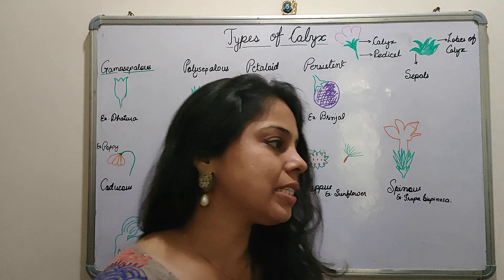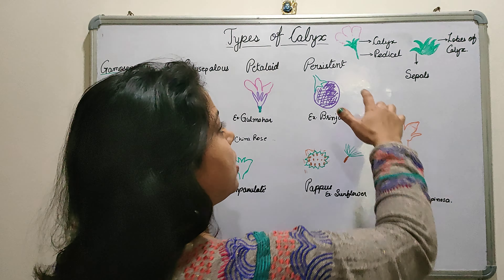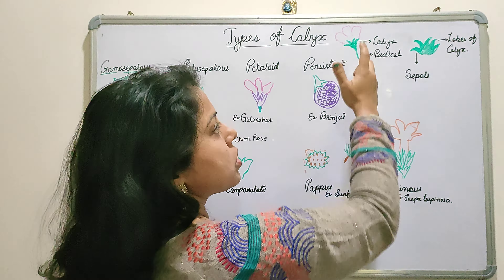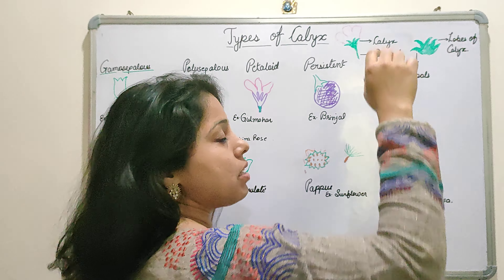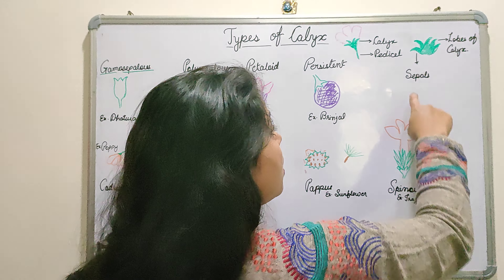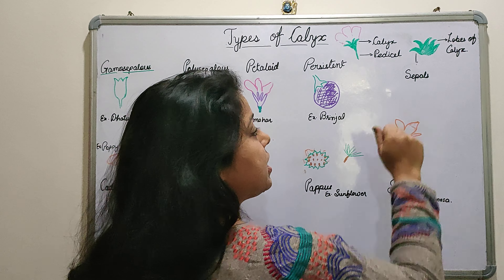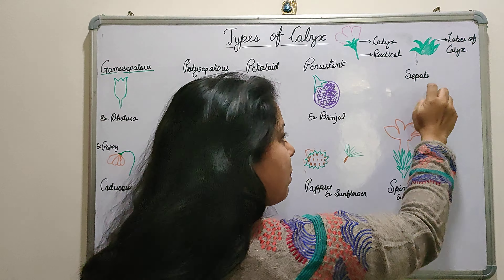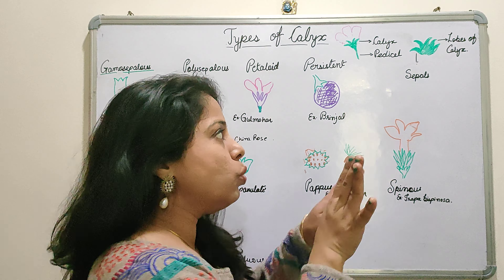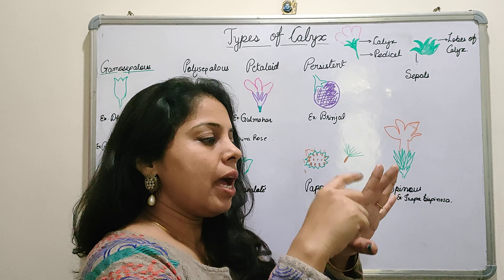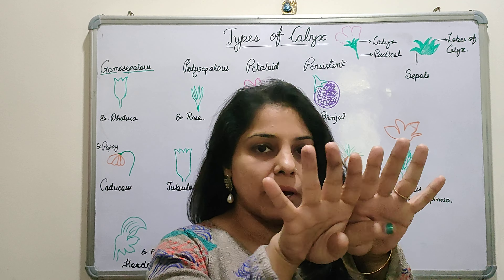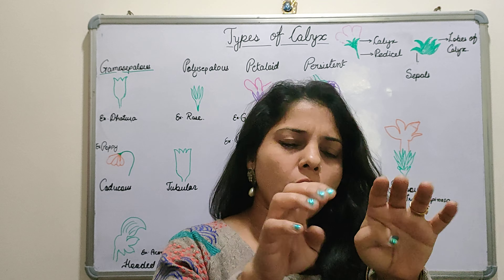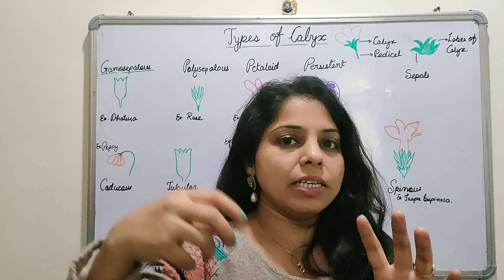What is calyx? Calyx is the outermost whorl of the flower, which is made up of sepals. It is directly connected to the pedicel, which is the stalk of the flower. The unit structure of calyx is sepals. When sepals get fused at the lower part but remain apart at the uppermost part, that upper free portion is called the lobes of calyx.